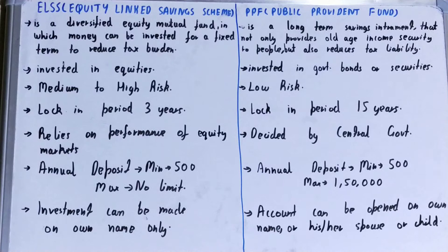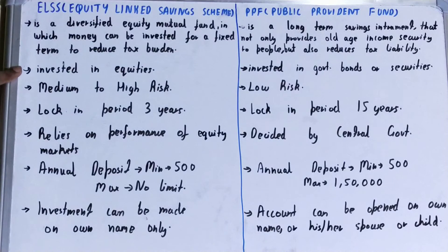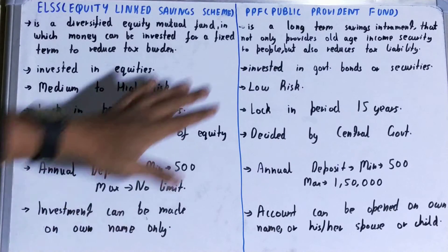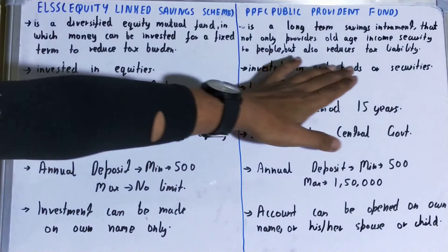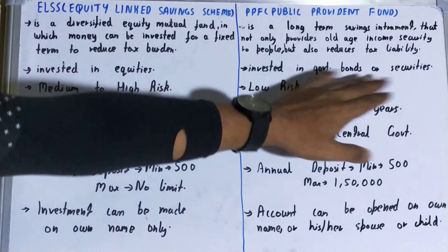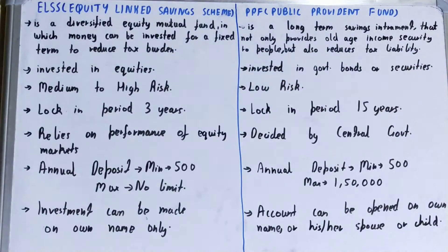Next, if we talk about where the money is invested — in case of ELSS the money is invested in equities, but if we talk about PPF the money is invested in government bonds or securities.